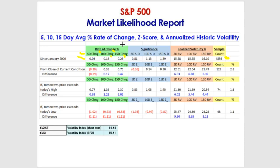Now let's look at our 129 occurrences of the current market condition — roughly 2.8% of the total sample. The five-day rate of change on average for those 129 is downward 0.2%. Instead of going up 0.09% to benchmark, it actually averages down a fifth of a percent. The 10-day rate of change is to the upside at plus 0.35%, which is more than the benchmark of 0.18%. And the three-week rate of change is at 0.7%, much greater than the benchmark of 0.28%.